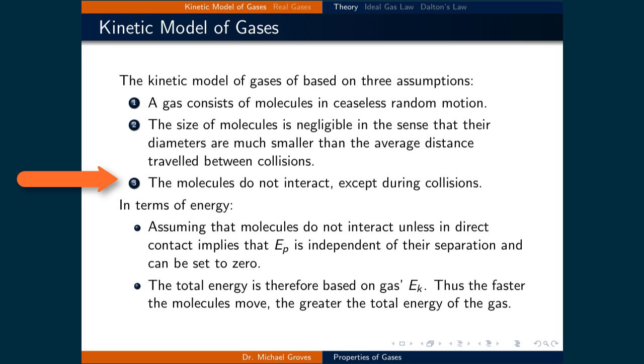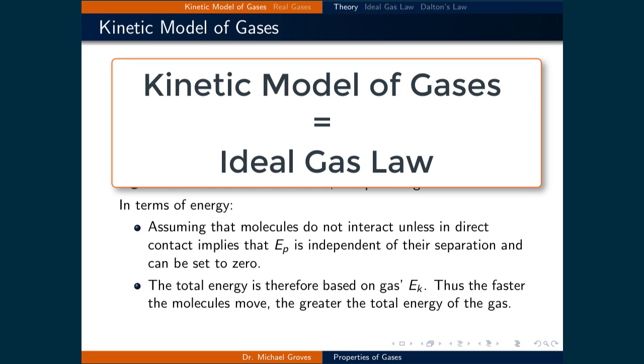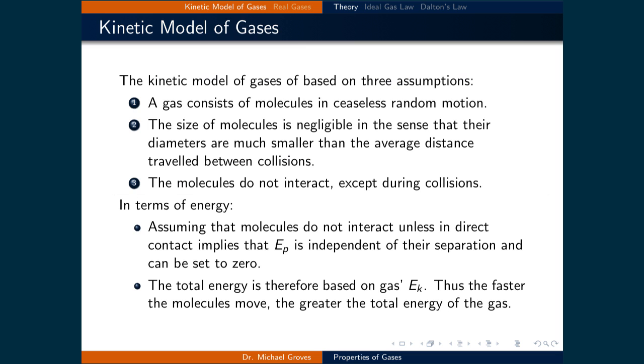This assumption that the molecules do not interact outside of collisions is, of course, not consistent with reality. We will come back to that later when we improve the model. For now, we will adhere to these three assumptions since what is derived from them is the ideal gas law. Gases that we apply the kinetic model to will be called ideal gases. For the majority of systems, it is very reliable, and we will be using it throughout the course.